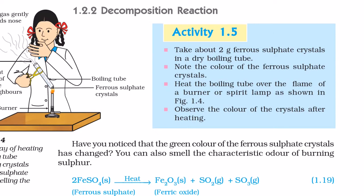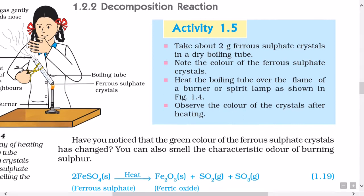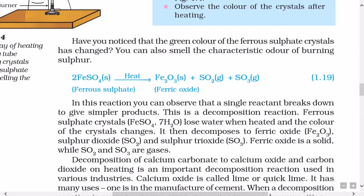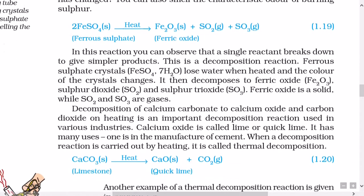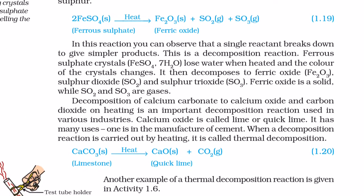1.2.2 Decomposition Reaction. Activity 1.5: Take about 2 g ferrous sulphate crystals in a dry boiling tube. Note the color of the ferrous sulphate crystals. Heat the boiling tube over the flame of a burner or spirit lamp as shown in figure 1.4. Observe the color of the crystals after heating. The green color of the ferrous sulphate crystals changes, and you can also smell the characteristic odor of burning sulphur. The reaction is: 2FeSO4 (solid), i.e. ferrous sulphate, when heated, gives rise to Fe2O3 (solid) plus SO2 (gaseous) plus SO3 (gaseous). In this reaction, a single reactant breaks down to give simpler products — this is a decomposition reaction.